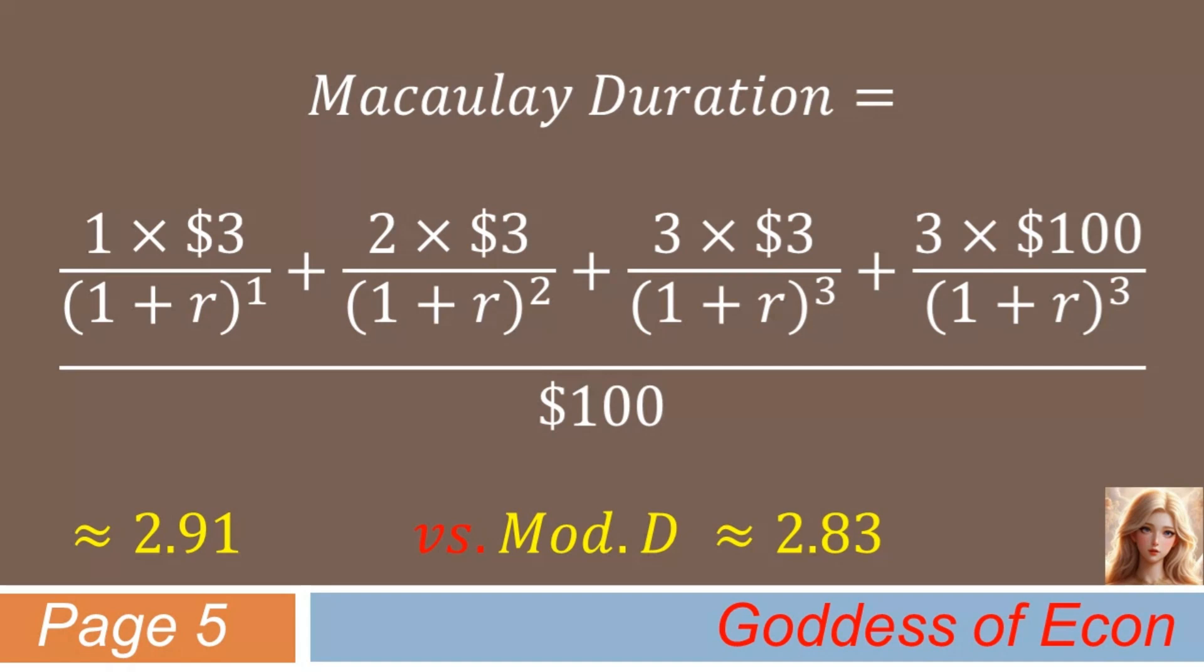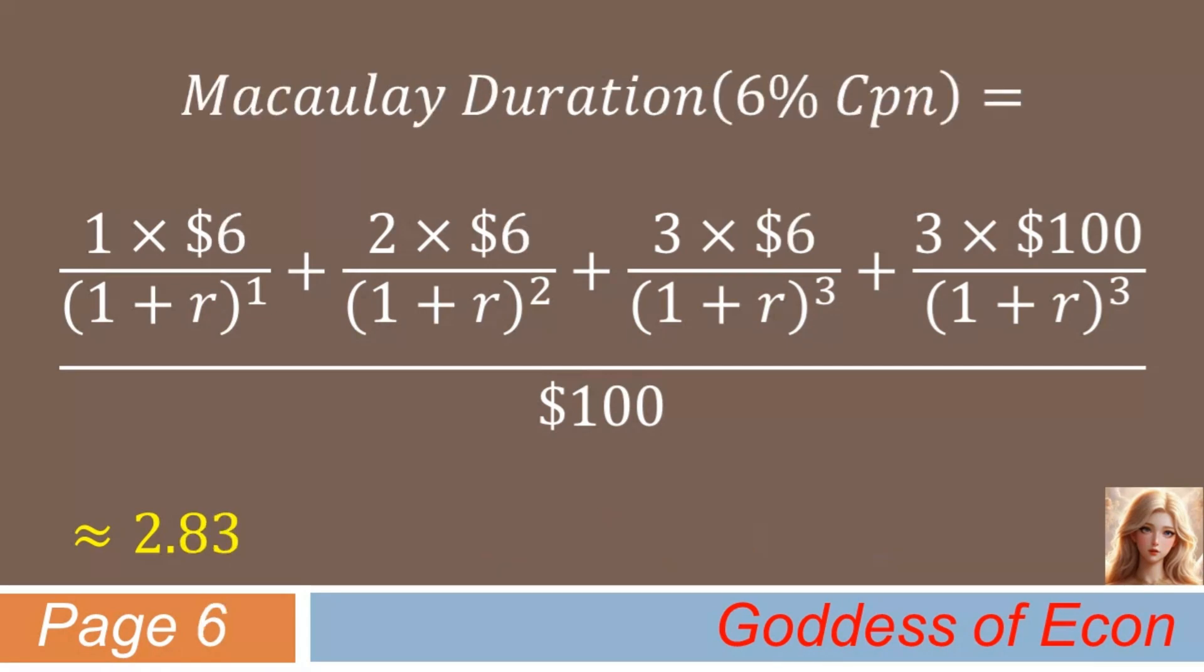Let's look at another example. Here, the coupon rate is assumed higher at 6% per annum. Due to the coupon effect, the Macaulay duration is now lower than before at 2.83. What do you think the modified duration has become? Well, Goddess's own calculation shows that this time it's 2.67, which is indeed lower than its cousin, but still close enough.